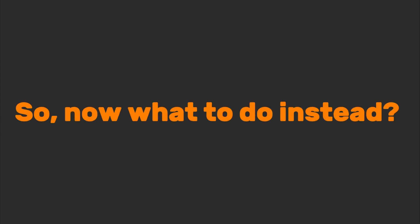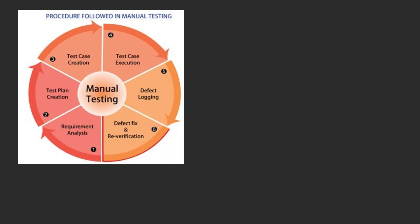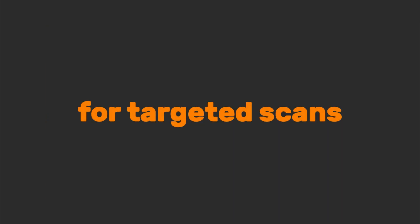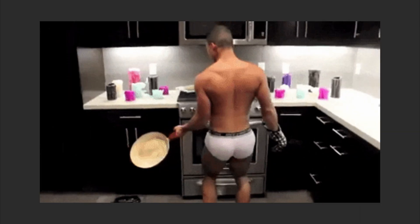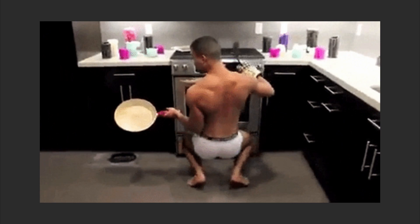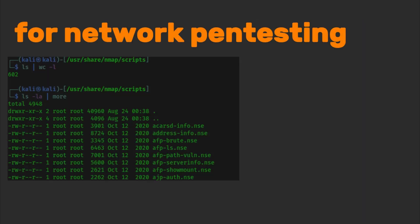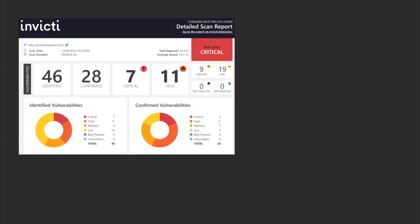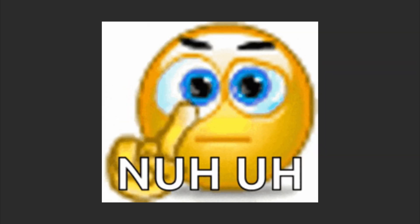What to do instead? Learn manual testing. Understand OWASP Top 10 like it's your favorite meme. Use Burp Suite for targeted scans — active scanning plus manual tweaking. For network pen testing, pair NMAP scripts with actual brain cells. Interpret the results. And if your scanner's report is thicker than a calculus textbook, you're doing it wrong.